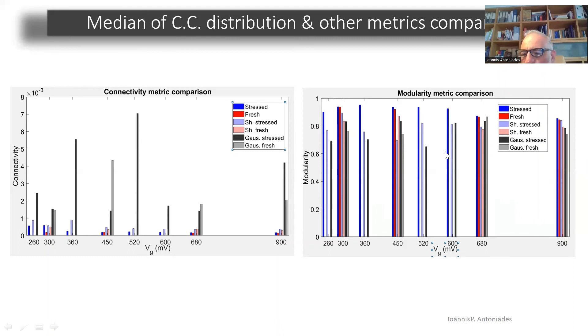And if you look at the modularity though, you see that the Gaussianized time series have lower modularities. So the original time series keeping the fat tails are more modular.